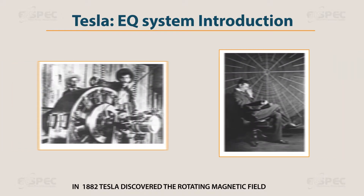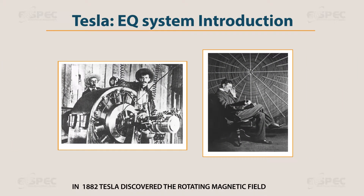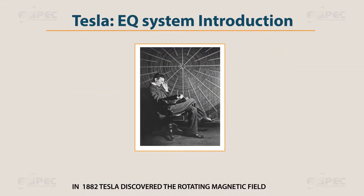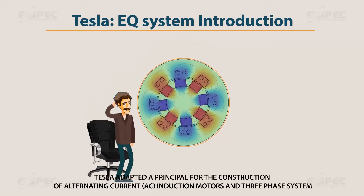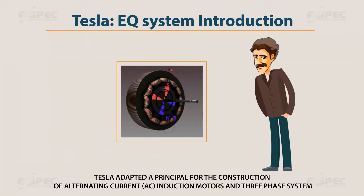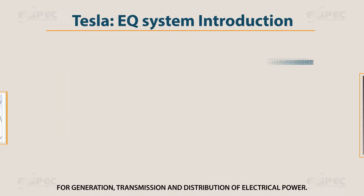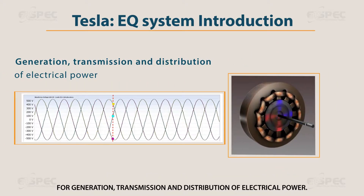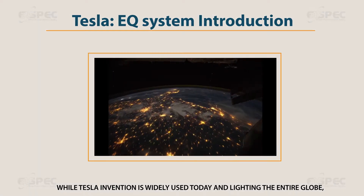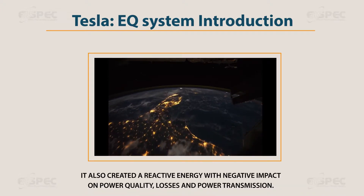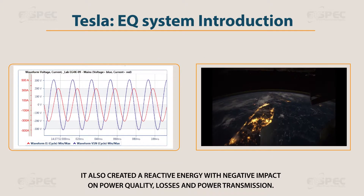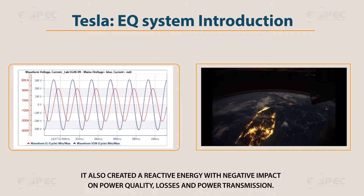In 1882, Tesla discovered the rotating magnetic field. Tesla adapted a principle for the construction of alternating current AC induction motors and three-phase systems for generation, transmission, and distribution of electrical power. While Tesla's invention is widely used today and lighting the entire globe, it also created reactive energy with negative impact on power quality, losses, and power transmission.